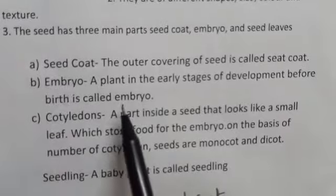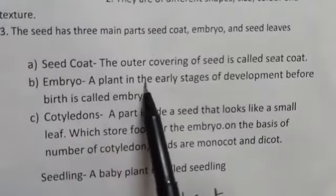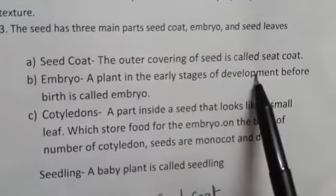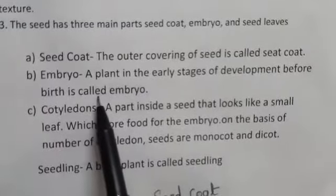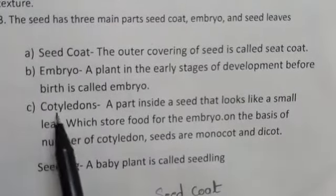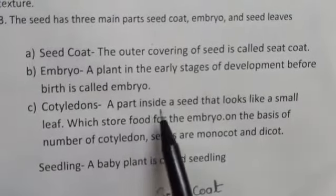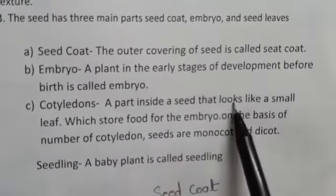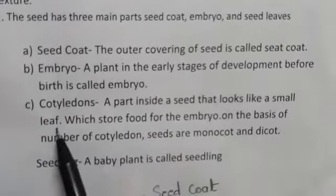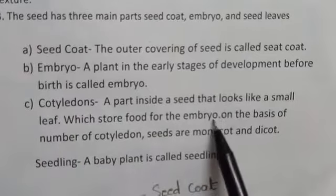Seed coat: the outer covering of a seed is called the seed coat. Embryo: a plant in the early stages of development before birth is called the embryo.